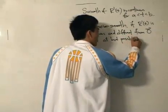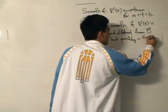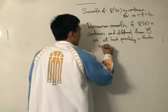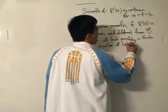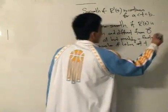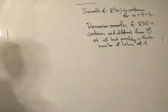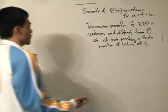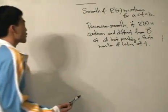Piecewise smooth, a curve is piecewise smooth if the first derivative of the position vector is continuous.